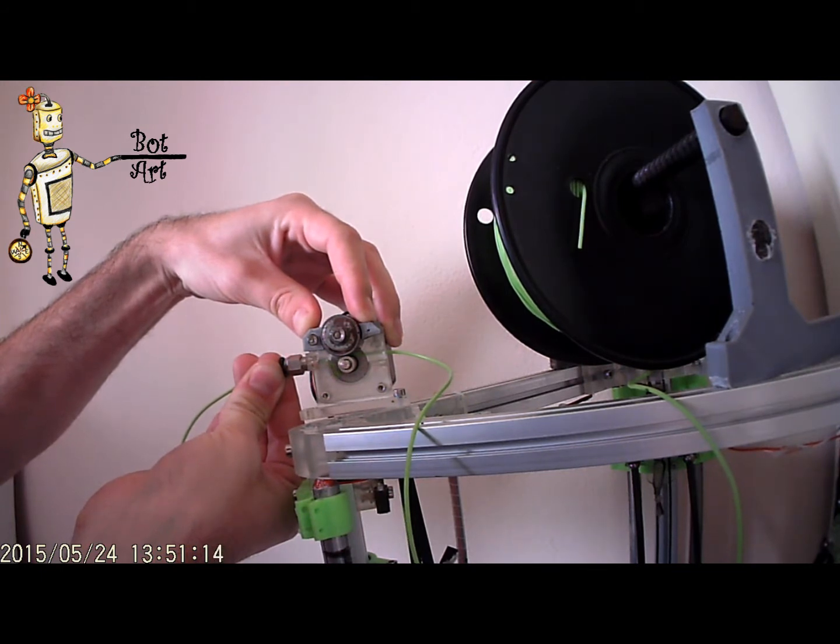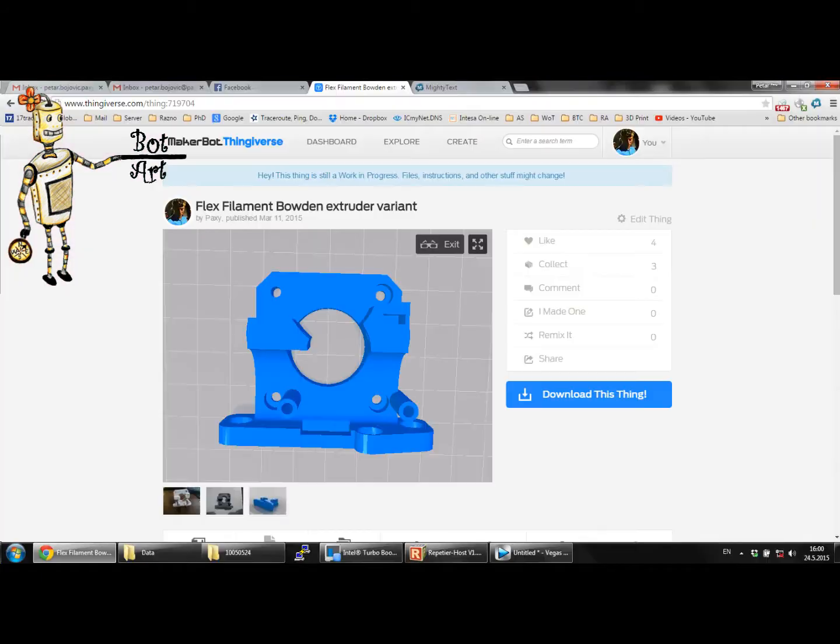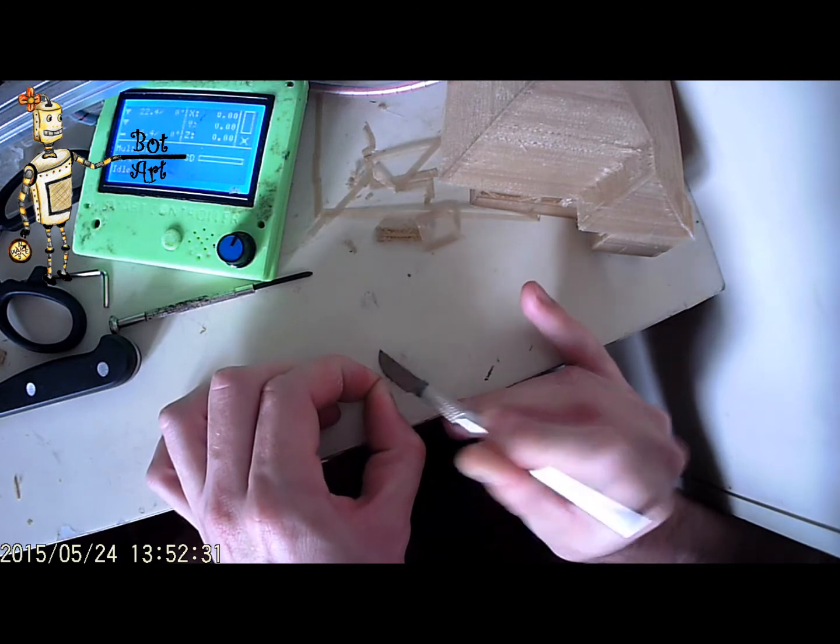Previously, I presented a modified model of extruder with filament guide close to the gear. This solution solved the issue most of the time, but with higher speed prints the problem still presented.